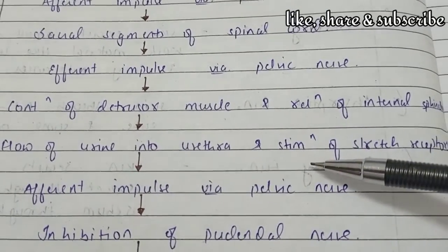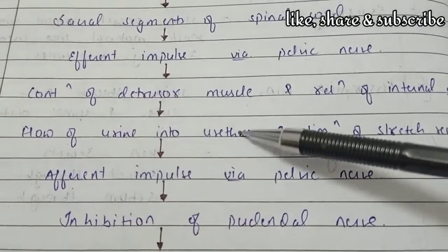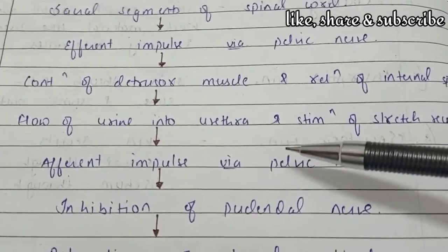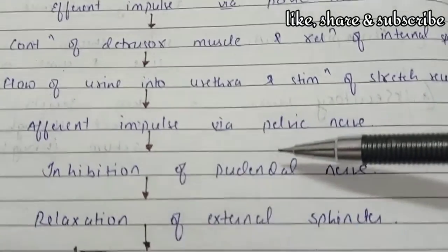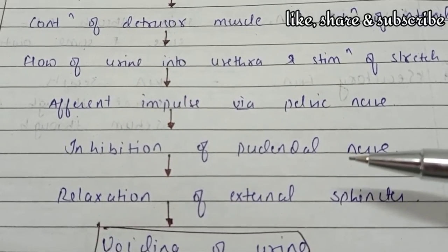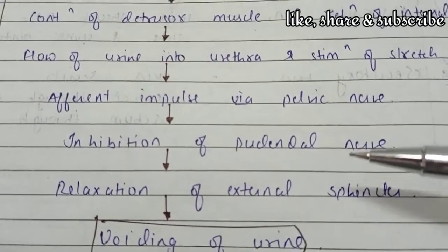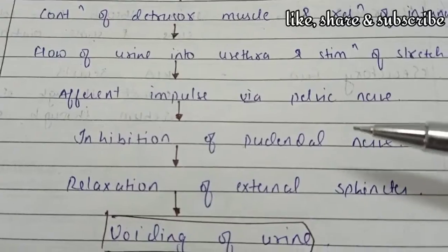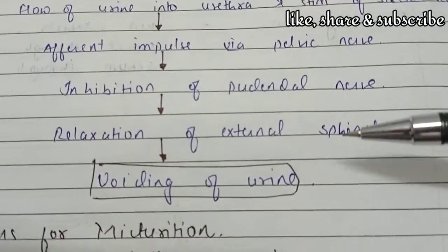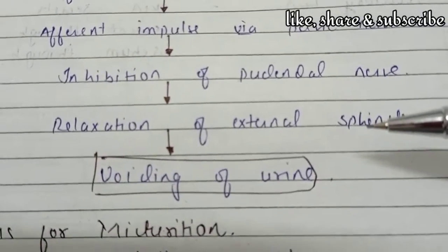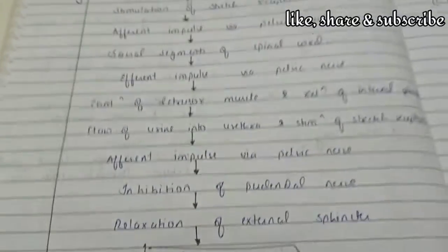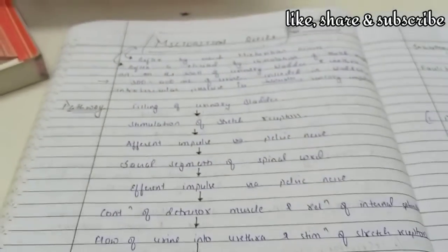Therefore, the stretch receptors will stimulate further. The efferent impulse travels via the pelvic nerve and then inhibits the pudendal nerve. Therefore, relaxation of the external sphincter occurs, and finally urine is out of the body. This is the whole pathway of the Micturation Reflex.